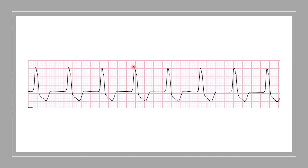Starting here and moving over to the next beat, we have about 3.6 boxes, giving us a heart rate at about 83 beats per minute. An idioventricular rhythm is around 20 to 40 beats per minute, and 40 to 100 is an accelerated idioventricular rhythm. So this would actually be an accelerated idioventricular rhythm.